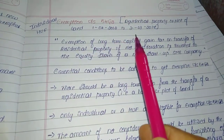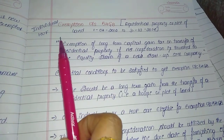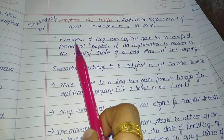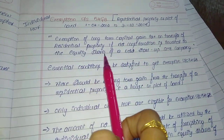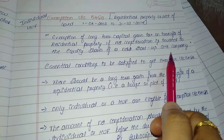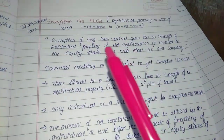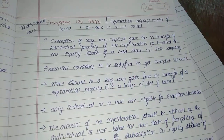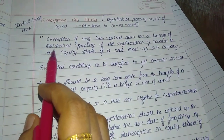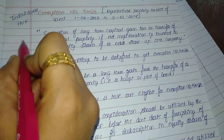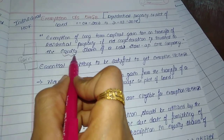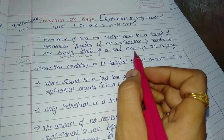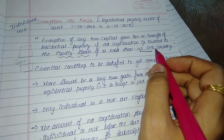The next topic is exemption under section 54GB. Again, this exemption is available only for individuals and HUF. It provides exemption of long-term capital gain tax on transfer of residential property, if the net consideration is invested in equity shares of new start-up and SME companies. SME stands for Small and Medium Enterprise. So to claim exemption under section 54GB, you must gain an amount from transferring your residential property and invest it in purchasing equity shares of eligible SME companies.